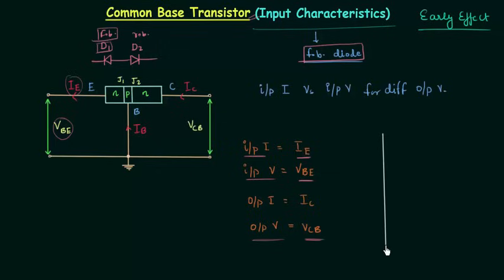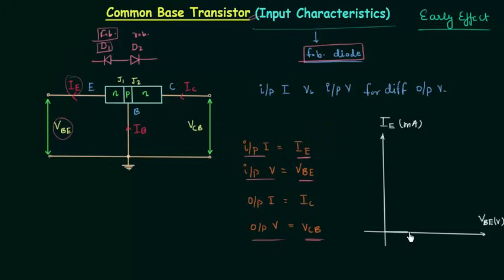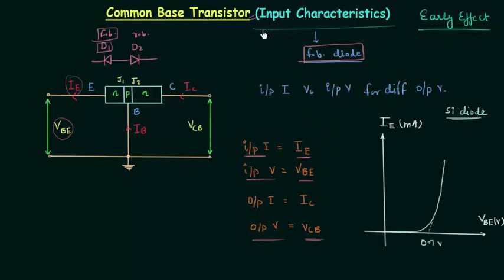This axis is for current, that is IE in milliamps. The X axis is for the voltage across the diode, that is VBE, measured in volts. The forward characteristics will simply look like this. The barrier potential is equal to 0.7V because we are considering silicon as the semiconductor material. This is the forward bias characteristics of a diode and also the input characteristics of common base transistor. The important thing is the effect on characteristics with change in VCB.